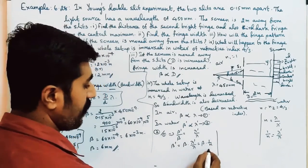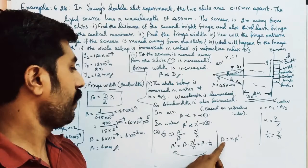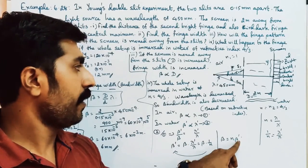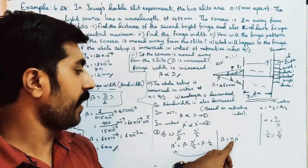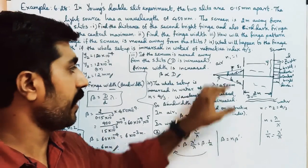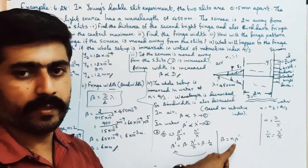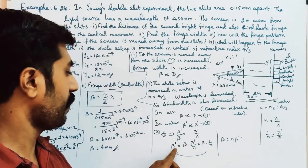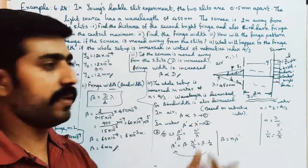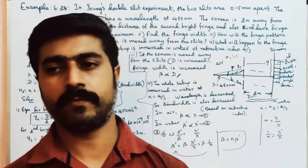So when immersed in water, the fringe width reduces by a factor of n. The fringes in water are n times smaller than in air, meaning the fringe width in water equals the air fringe width divided by the refractive index n. You can practice 1 or 2 more such questions. Ok, thank you.